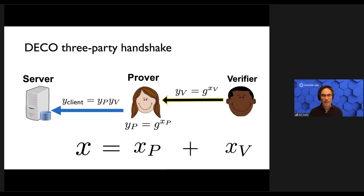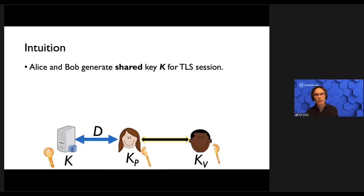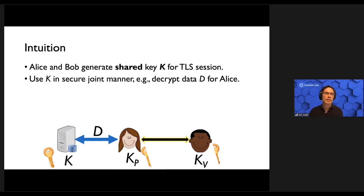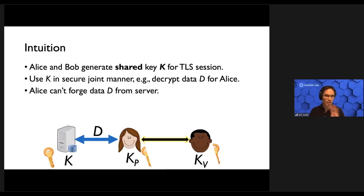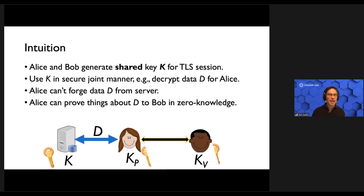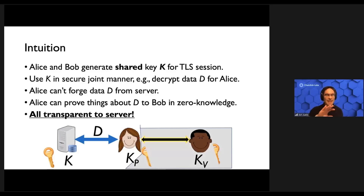This is only one tiny piece of the larger protocol. The full protocol is much more involved because the value X needs to be converted into a symmetric session key K and so on. The intuition is that Alice and Bob generate this shared key K for the TLS session and use it in a joint, secure manner — they can do things like decrypt data for Alice. The protocol is such that Alice can't forge data from the server because she doesn't know the session key at a critical time, but she can prove things about the data provided by the server to Bob in zero knowledge. And all of this is transparent to the server — it has no idea that there's an interactive protocol happening on the back end. As far as it's concerned, it's talking to a perfectly ordinary client.